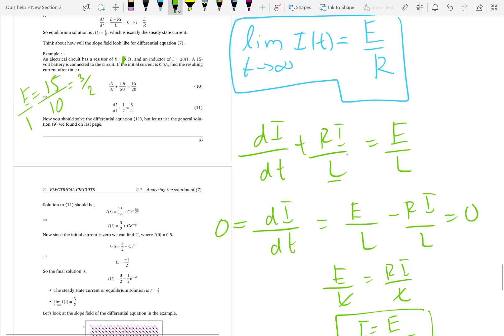So, 15 over 10 is 3 over 2. This is e over r, so that is the current after long time. The current after long time is 3 over 2.